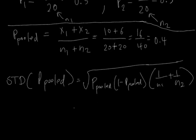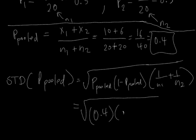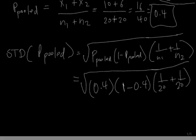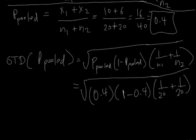I'm going to do this calculation right here. We know that P pooled is equal to 0.4. So this comes out to 0.4 times 1 minus 0.4 times 1 over 20 plus 1 over 20. If you go ahead and do this calculation, this is equivalent to 0.1549193.